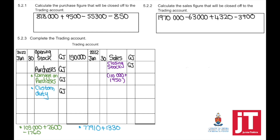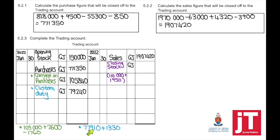Now that all the adjustments are done, we can start with 5.2.1 by calculating the total purchases — make sure you take the same amount calculated in 5.2.1 to the trading account. For 5.2.2, the total sales must be taken to the trading account. We can now close the brackets to calculate carriage on purchases — the amount from the pre-adjustment trial balance, plus and minus adjustments. The same applies to custom duty — we needed to add 1,350 for the total custom duty expense. Total closing stock is 110,000 + 1,950. Once done, we add the credit side minus the debit side to get the gross profit, which is closed off to the profit and loss account.